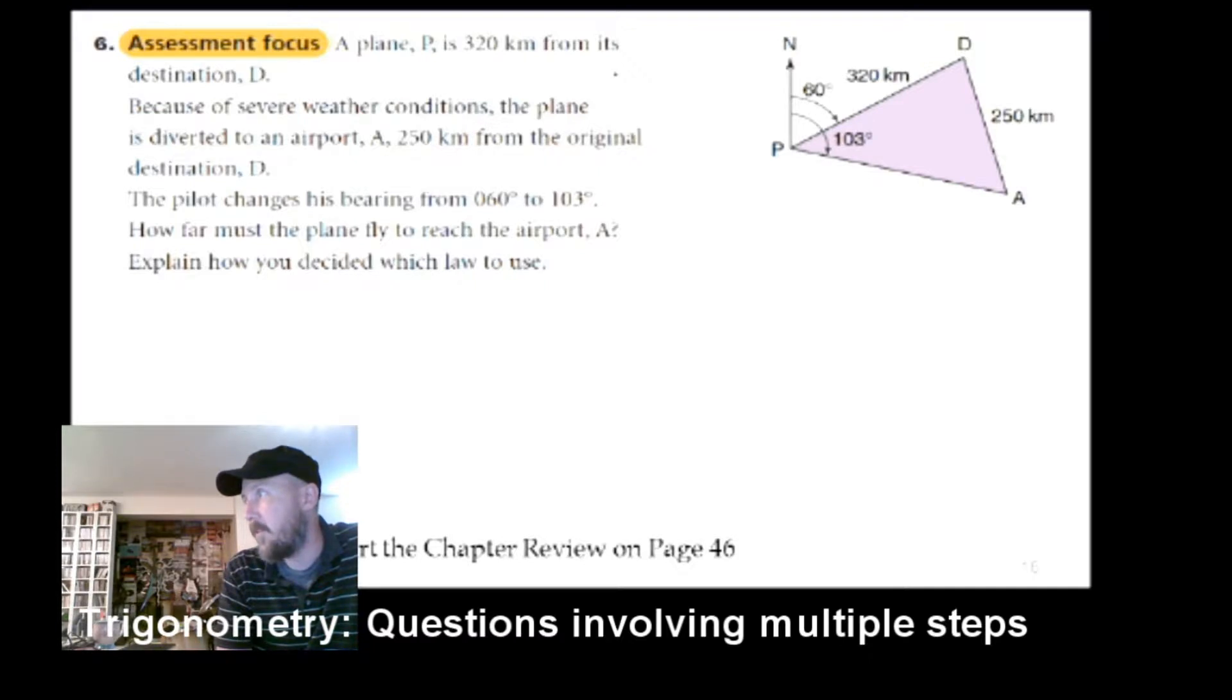Explain how we figure out which law to use. Okay, what do we want? How far must the plane fly to reach the airport? Oh boy, we've got to use a couple things here. So first thing that we've got to do: this whole thing is 103, this much of it right here is 60. It says right there. So if we do 103 minus 60, we're going to have what that angle is there.